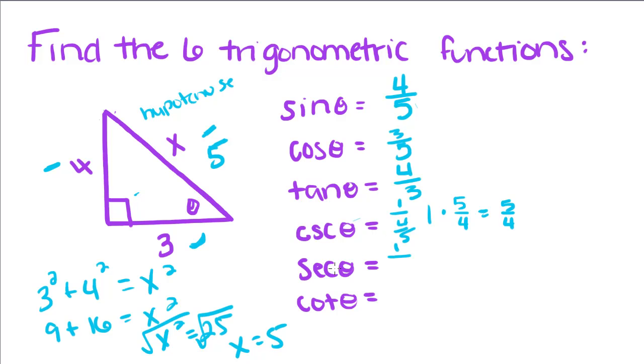So, the same rule applies for secant, except we do this with cosine. So, 1 times, we're going to keep this, change the sign, flip the fraction, and get 5 thirds, or hypotenuse over adjacent.